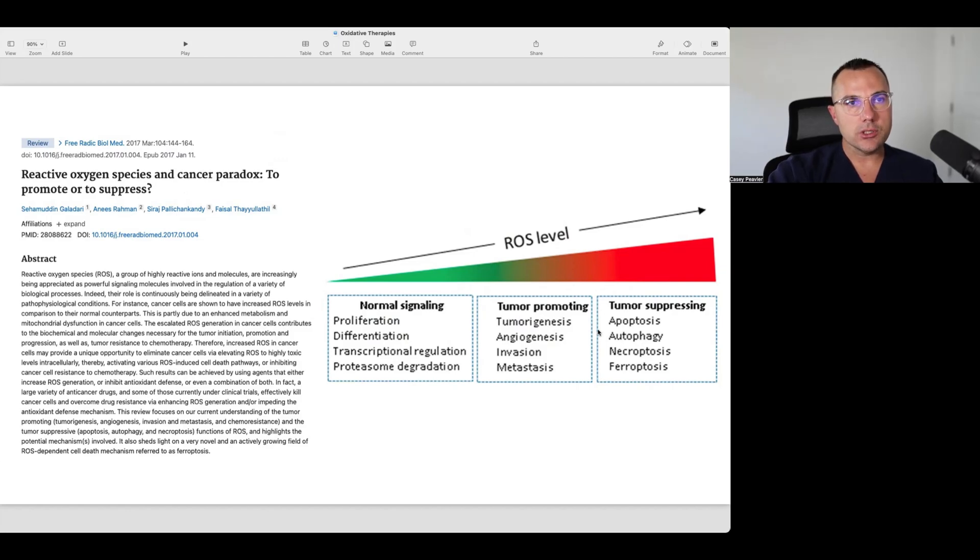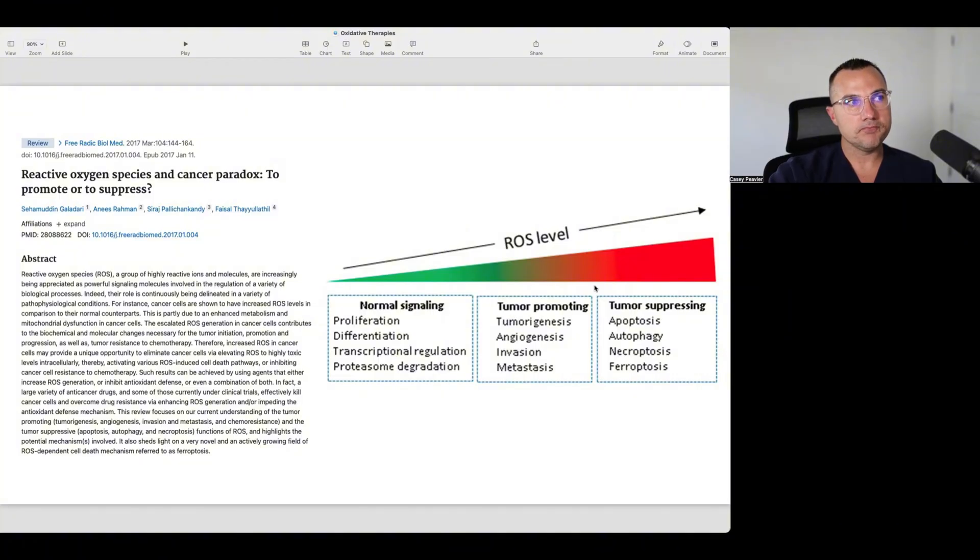At a certain level, on the other end of the continuum at an extreme high level, we have tumor suppressing effects. What we know is that cancer cells have more ROS compared to normal cells. So they have systems in place that can help buffer this extra ROS and make them more resistant to oxidative stress.